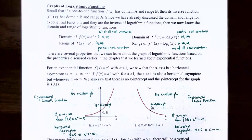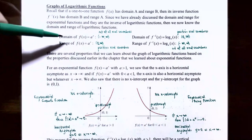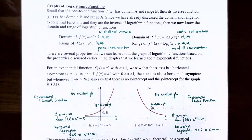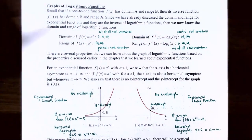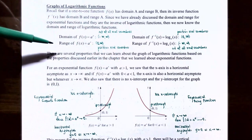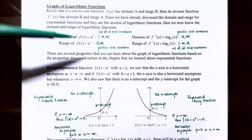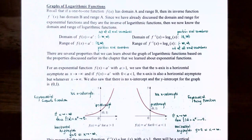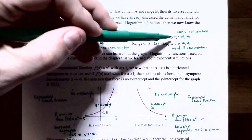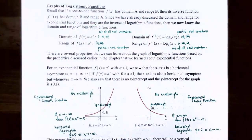Since a logarithmic function is the inverse function of an exponential function, we know that the domain of the exponential function will be the range of the inverse, which is the logarithmic function of base a. So the range of f inverse of x, which is log base a of x, is the set of all real numbers, negative infinity to infinity. And the domain of log base a of x is zero to infinity, or the positive real numbers. This means that the argument of the logarithm base a must be a positive real number for the logarithm to give you an output value.